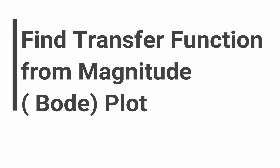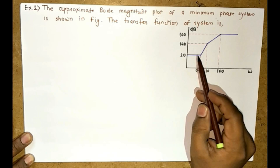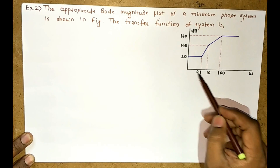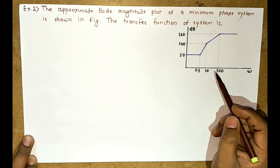In a previous video, I showed how to solve a numerical from a magnitude plot to find the transfer function. Let us consider one more numerical so you can better understand how to find the transfer function from a given magnitude plot. The approximate Bode magnitude plot of a minimum phase system is shown in the figure, and we need to find the transfer function of the system.